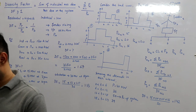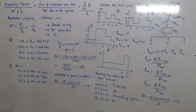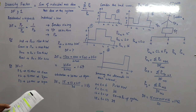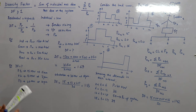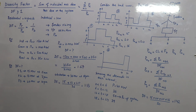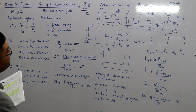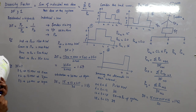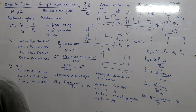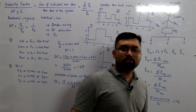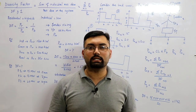I have one more example involving six residential apartments, three offices, and a shop with an overall diversity factor, power factor, and connected load given — but we will do that in the next video so this one doesn't get too long. The next video will be dedicated to examples. See you soon, take care, goodbye.